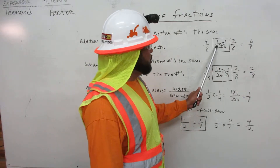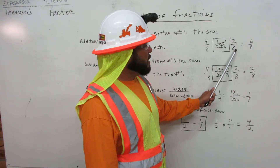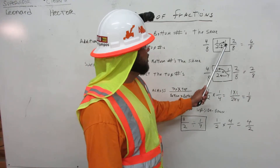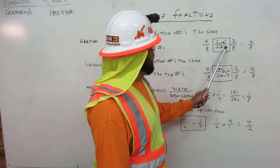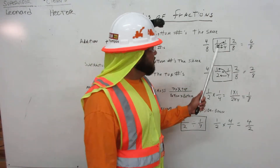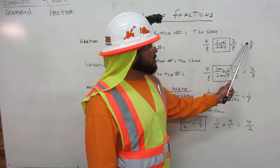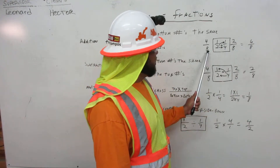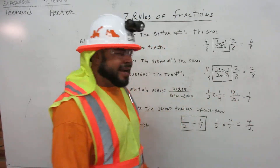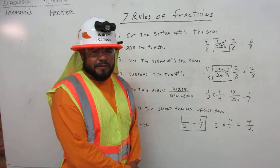So now we multiply. Two times one equals two, two times four equals eight. And we go backwards. Four times one equals four, and four times two equals eight. Now we add: four plus two equals six, and we bring the eight over. And that's how you do all the addition on fractions.